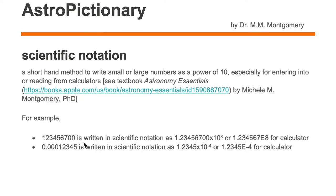For example, the whole number 123,456,700 is written in scientific notation as 1.234567 times 10 to the eighth.